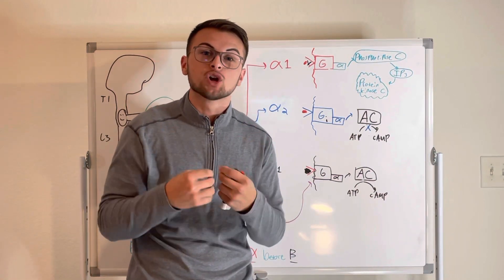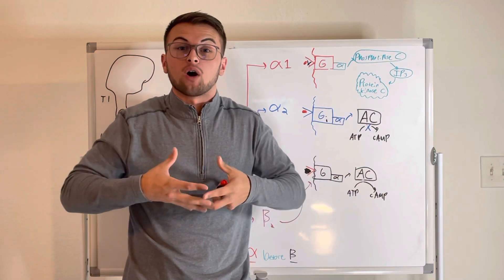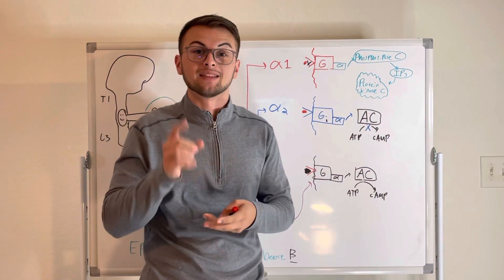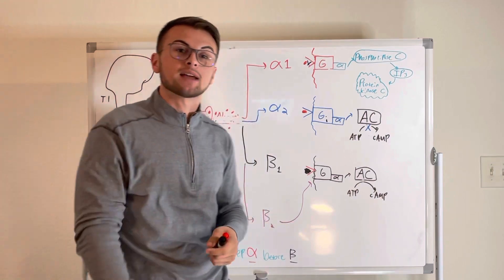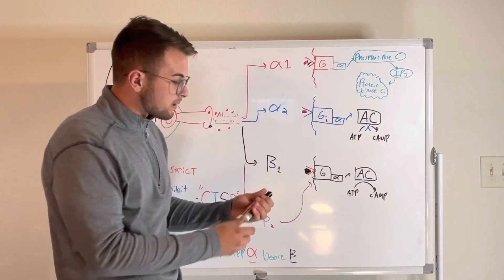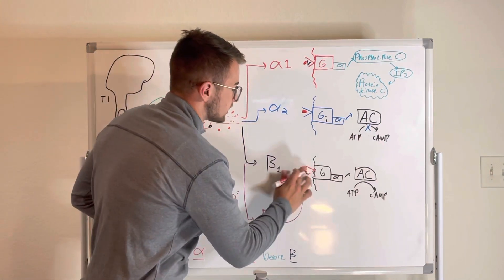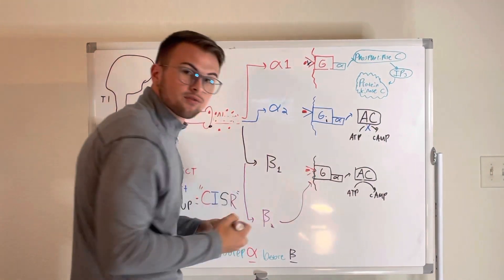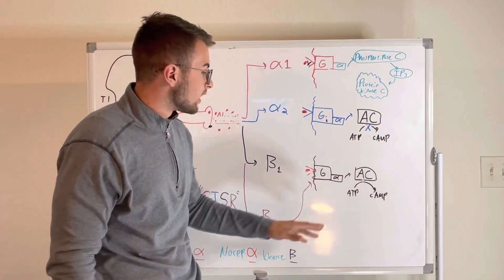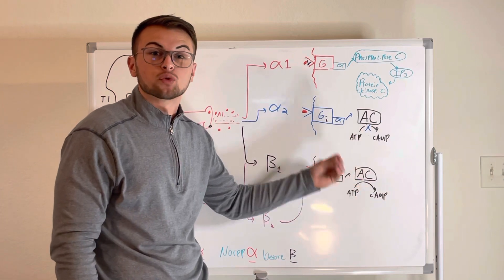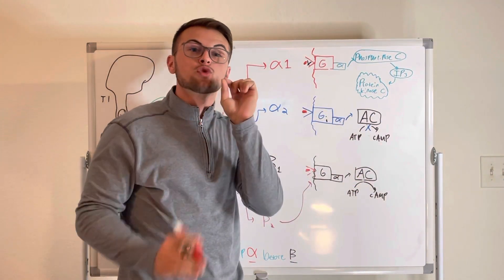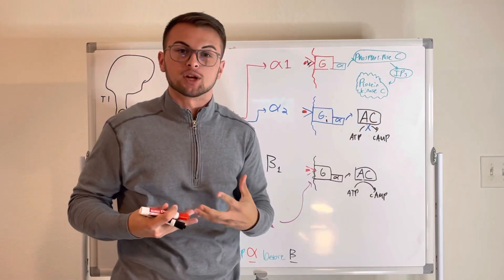So these will relax or dilate our bronchioles and the blood vessels of our skeletal muscle. These receptors have the same mechanism of action as the beta-1 receptors. Norepinephrine will bind to and activate these G proteins, which will activate adenylyl cyclase, which will result in an increase in cyclic AMP, which will result in relaxation.